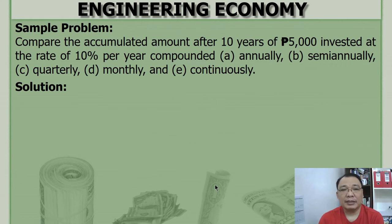So to explain or to illustrate, let's solve this problem: Compare the accumulated amount after 10 years of P5,000 invested at the rate of 10% per year compounded annually, semi-annually, quarterly, monthly, and continuously.